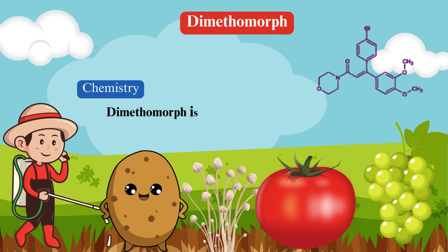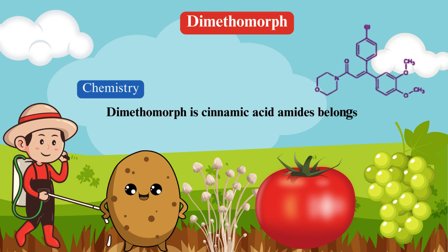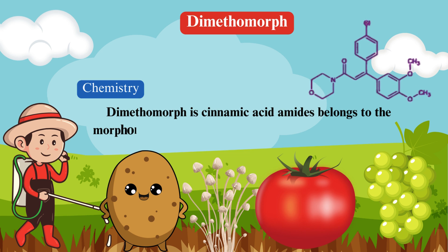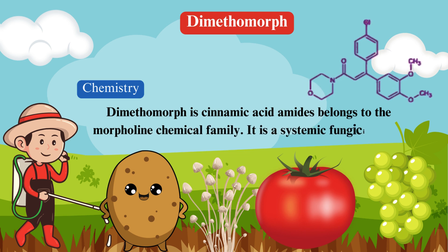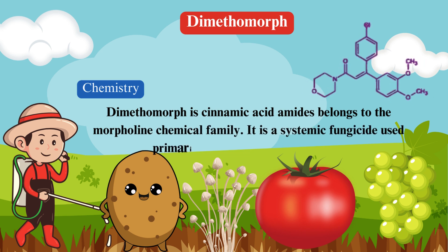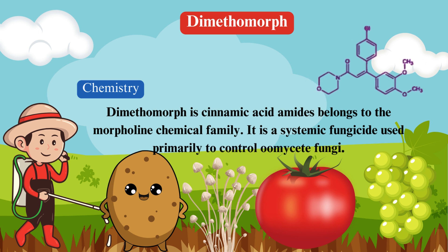Dimethomorph belongs to the cinnamic acid amides and the morpholine chemical family. It is a systemic fungicide used primarily to control oomycete fungi.